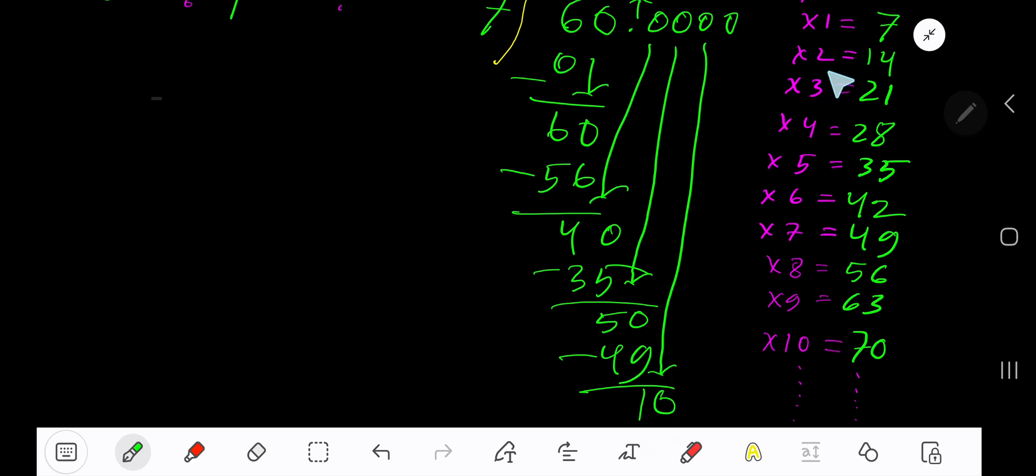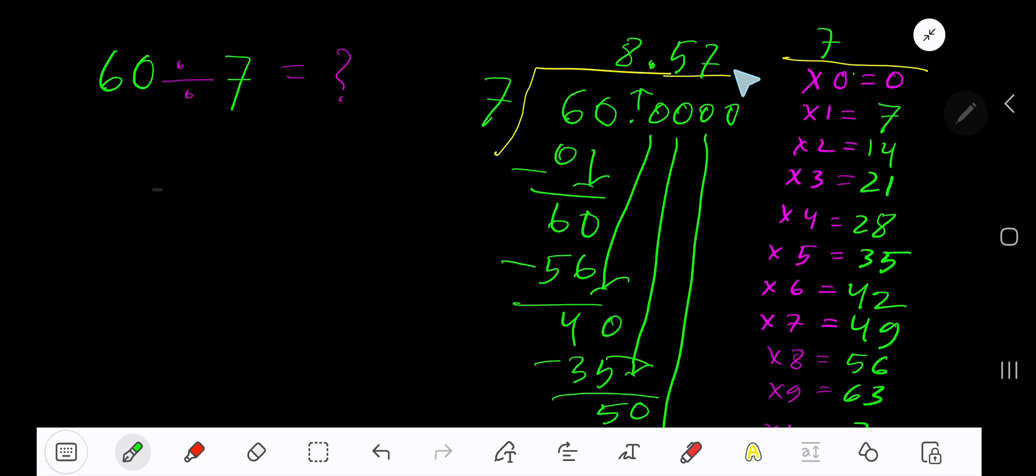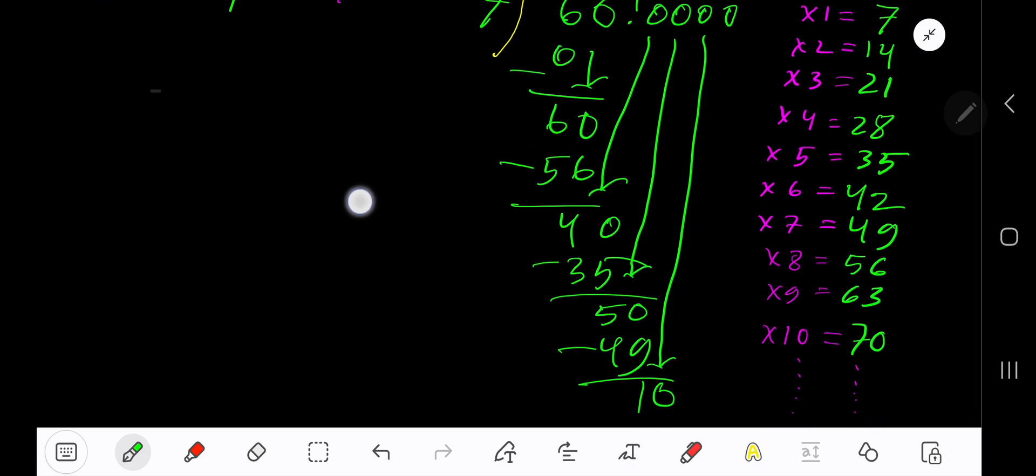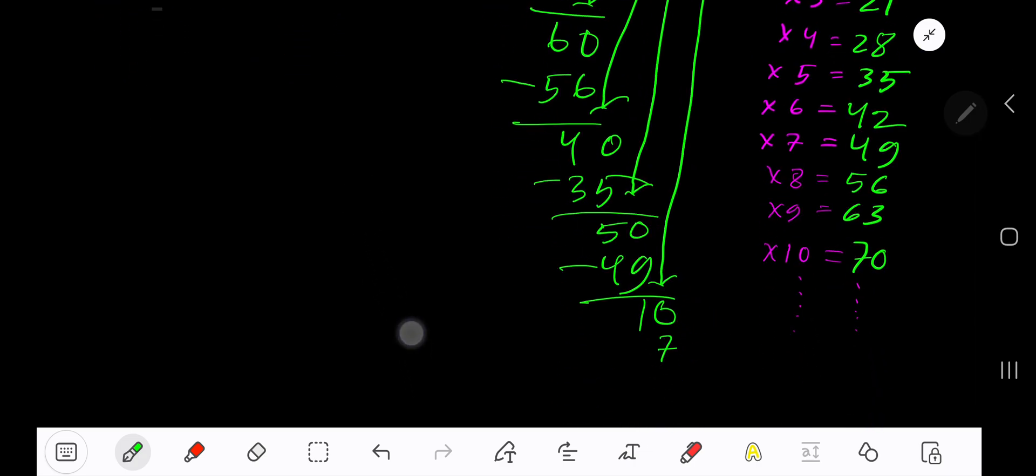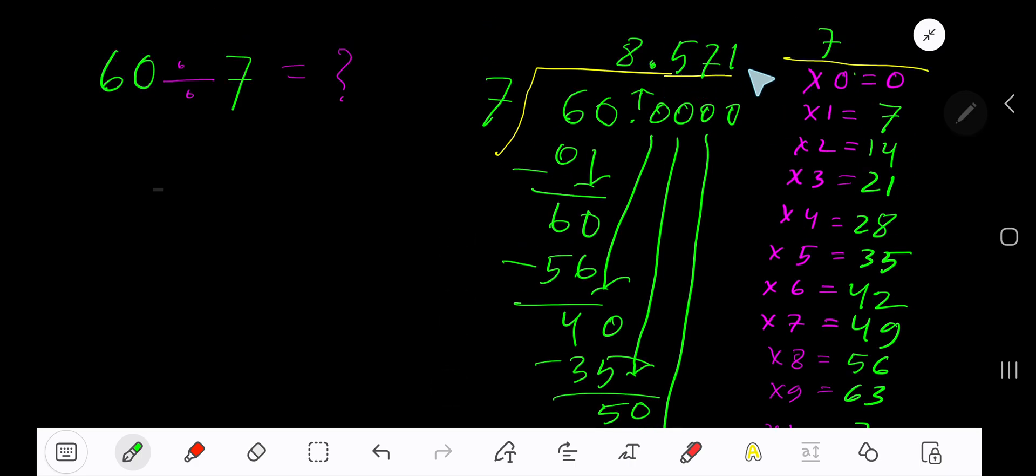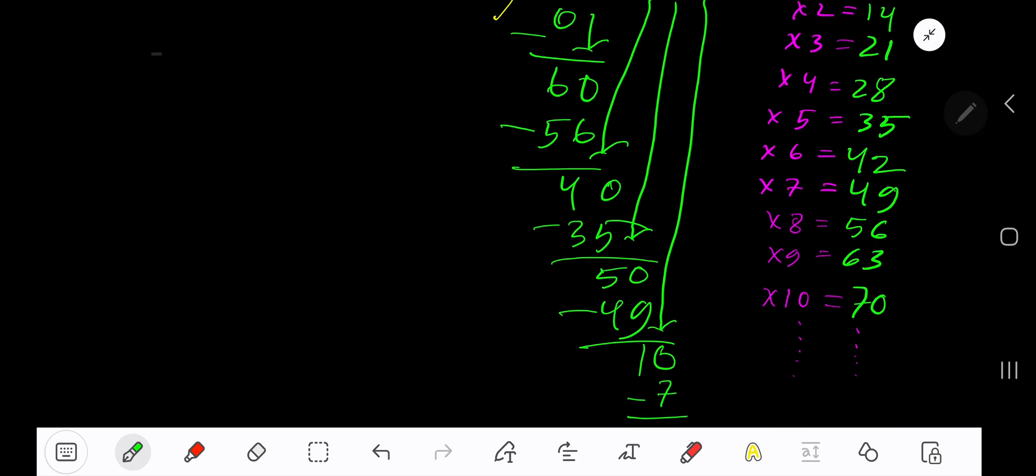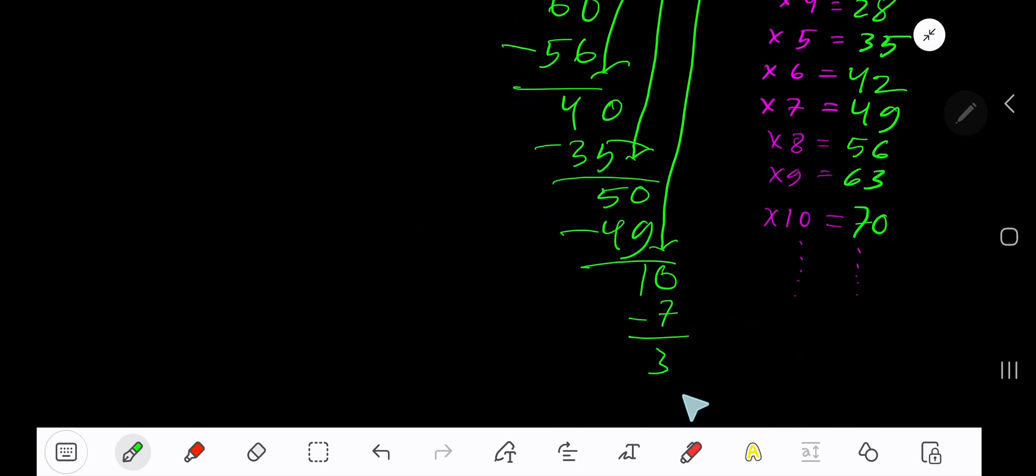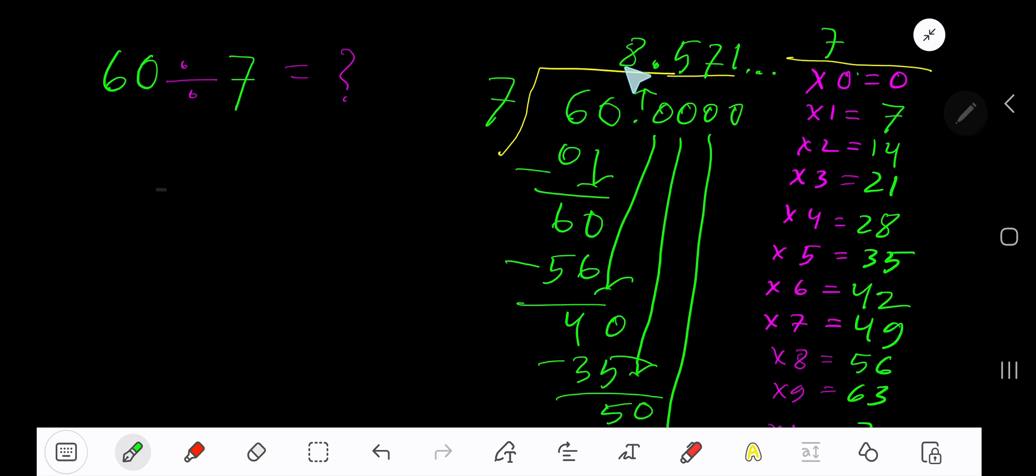7 goes into 10 how many times? 2 times would be 14, which is too much, so 1 time. 1 times 7 is 7. Subtract to get 3. Place dots to show this process is continuing. 8.571... is the answer.